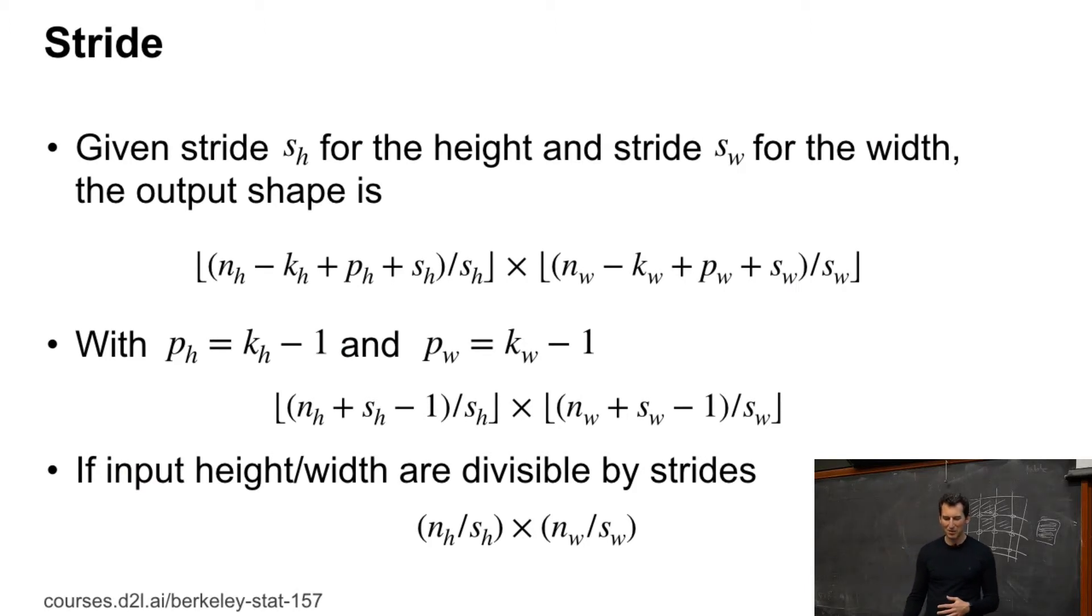And you take the floor of the corresponding integers. The floor because if there's not enough space left for another jump, let's say the next row would be over there, well that just doesn't make it.